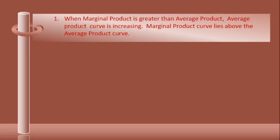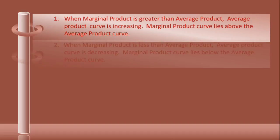First, when the marginal product is greater than the average product, the average product curve is increasing, and the marginal product curve lies above the average product curve.